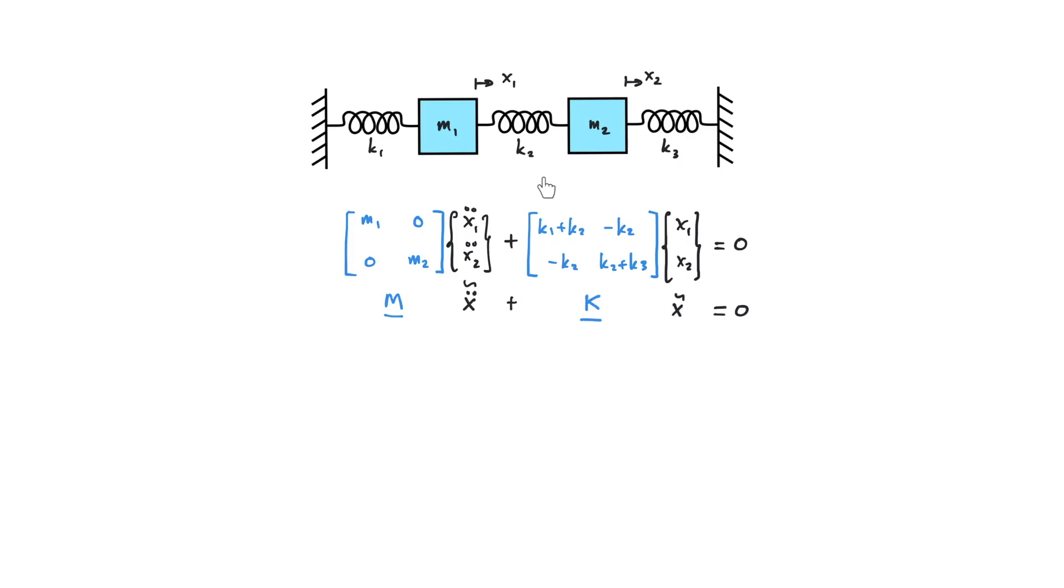Now because we are dealing with the harmonic motions, I can write down the displacement of the system in terms of the complex exponential notations where X equals to X capital e to the power j omega t. So by two times derivations we have X double dot equals to minus omega square X e to the power j omega t. Remember that j is square root of minus 1. If you are not sure about this one please refer to my previous video on the complex exponential notations.